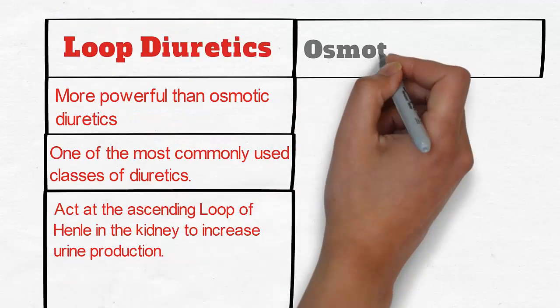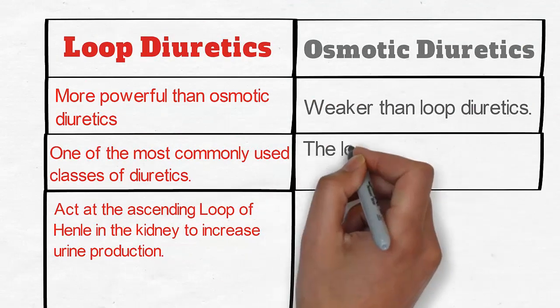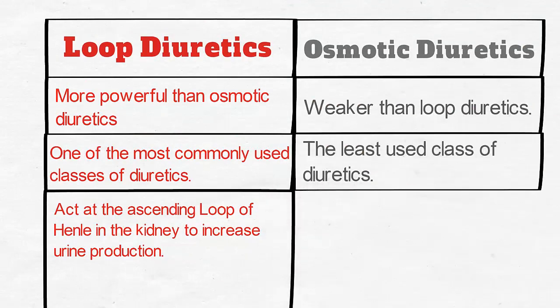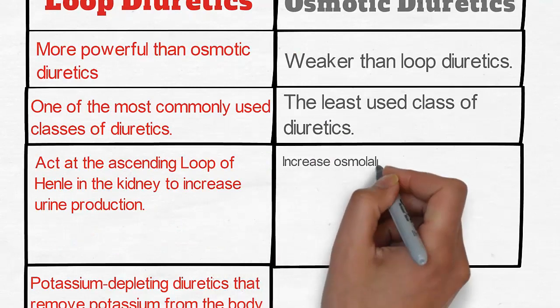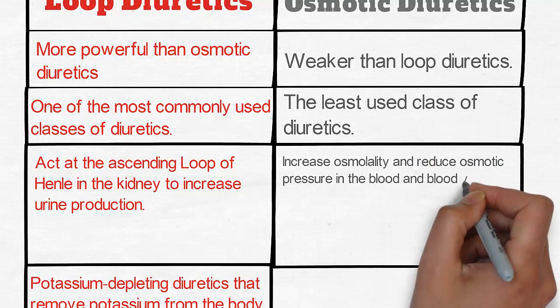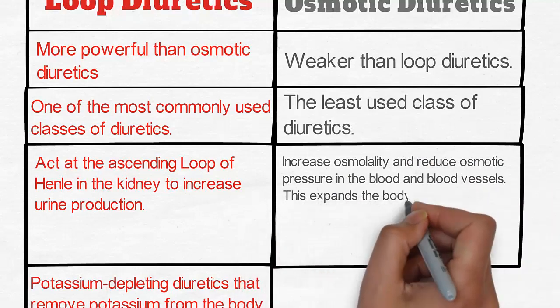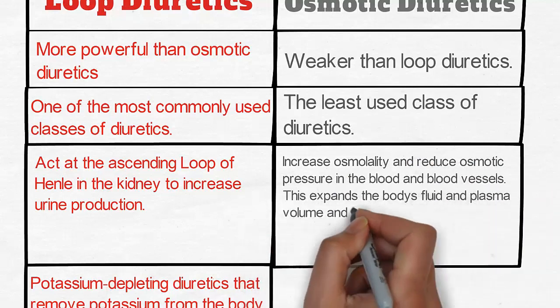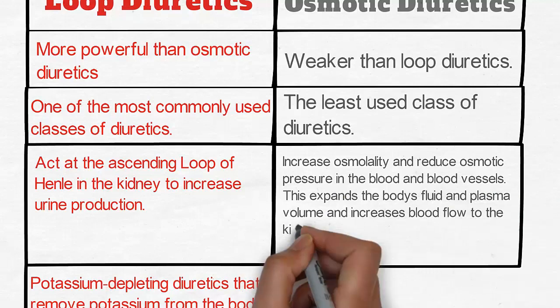Osmotic diuretics. Weaker than loop diuretics. The least used class of diuretics. Increase osmolality and reduce osmotic pressure in the blood and blood vessels. This expands the body's fluid and plasma volume and increases blood flow to the kidneys.